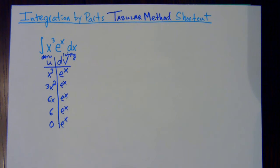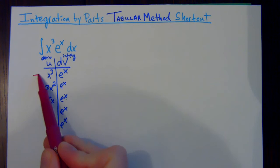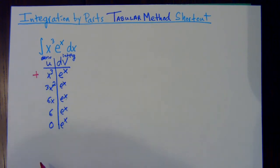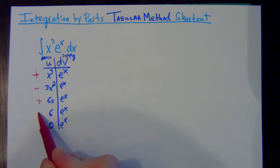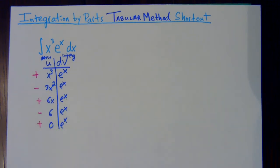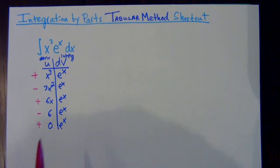The next thing you do is handle the signs. You start with a plus and then alternate the signs the whole way down. You always start with a plus and alternate all the way down — it ends with whatever it ends with, depending on how many terms you have.